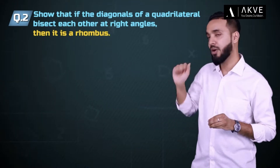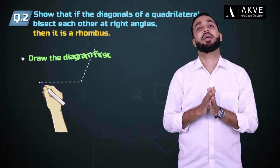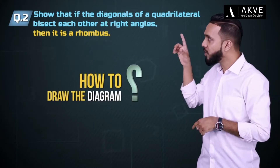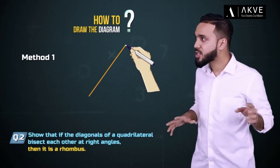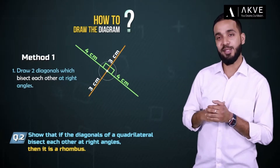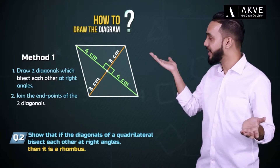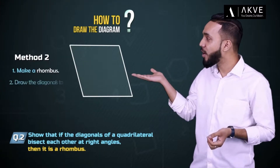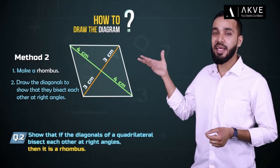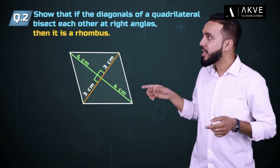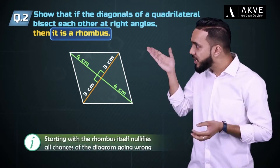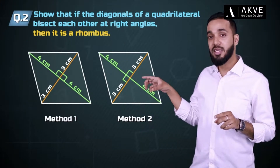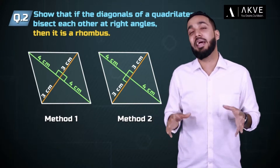This one's also very easy to prove. For such questions, it's always better to draw the diagrams first so it becomes easier to visualize. One way is to first draw two diagonals which bisect each other at right angles and then join the different endpoints. Another way is to first make a rhombus and then draw out its diagonals to show that they bisect each other at right angles. Both methods will get you the desired diagram so you can begin solving mathematically.